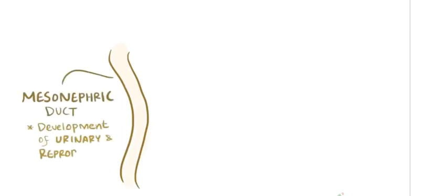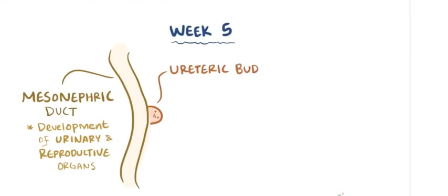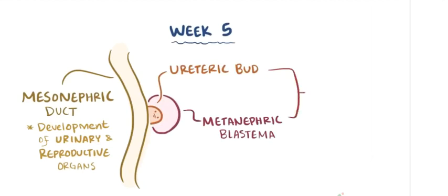Alright, so during fetal development, first off you've got this structure called the mesonephric duct, which is involved in development of urinary and reproductive organs. And during the fifth week of gestation, a little guy called the ureteric bud starts pushing its way into another structure called the metanephric blastema. And together these two little embryologic structures go on to develop into a kidney.